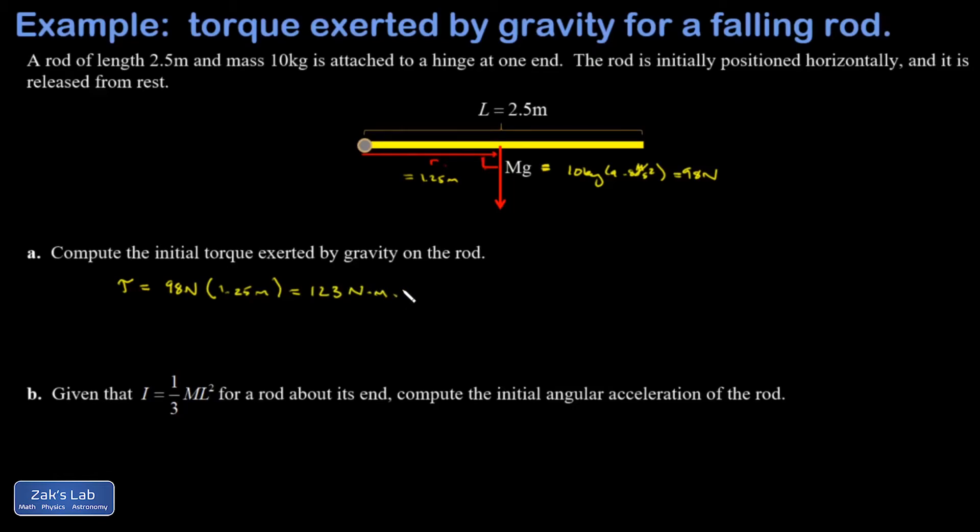In part b, we're given the moment of inertia for the rod as one third ML squared. You can look these formulas up when you need them, but they do come from integral calculus. I have the moment of inertia formula and the total torque, which allows me to get the initial angular acceleration.